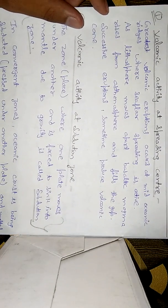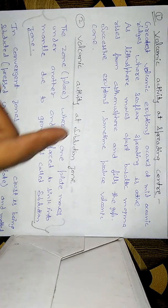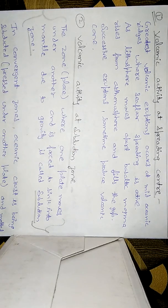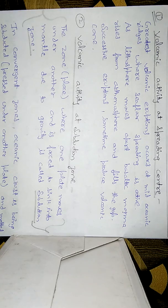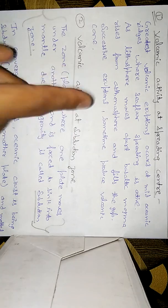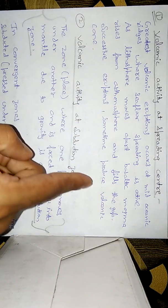Now moving ahead, we are going to study those three zones in detail. The first one is spreading centers. The greatest volcanic eruptions occur at mid-oceanic ridges. The spreading centers are basically mid-oceanic ridges, and when magma comes up, volcanic activity takes place. Where seafloor spreading is active and magma rises, seafloor spreads and volcanic eruptions take place at those places.